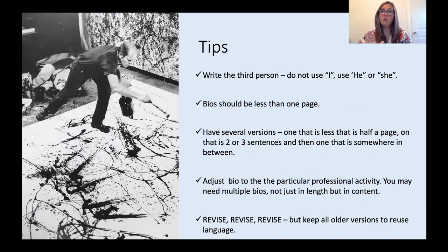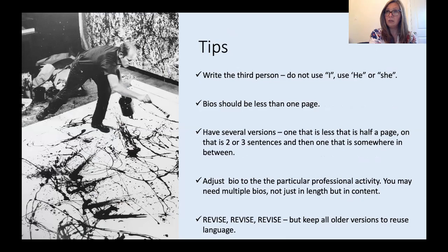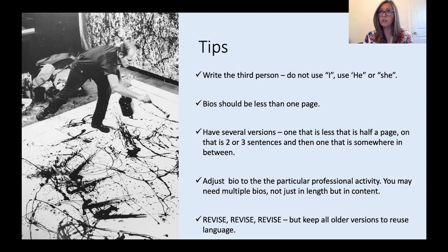Here are a few tips. Write in the third person — in a bio you never want to say 'I.' You can go back and reread the artist's bios or my bio: it's always 'she,' or your name, or 'his name' — that's how you should refer to yourself. Bios should always be less than one page. We've talked about long, medium, and short — even the long one is just a few paragraphs. Have several versions: one that's less than half a page, one that is two to three sentences, and one somewhere in between. Adjust your bio to the particular professional activity.